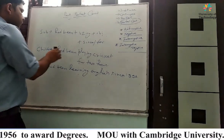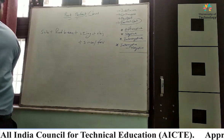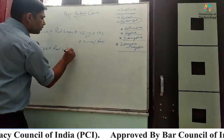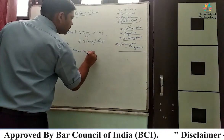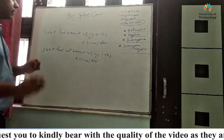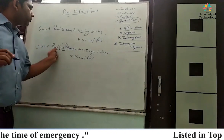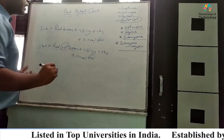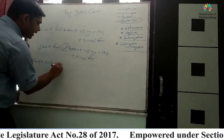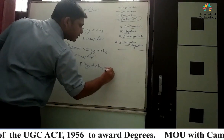For negative sentences in past perfect continuous: subject plus had not been plus verb -ing plus object plus since/for. Pay attention — 'not' comes between 'had' and 'been'. For interrogative: had plus subject plus been plus verb -ing plus object plus since/for.